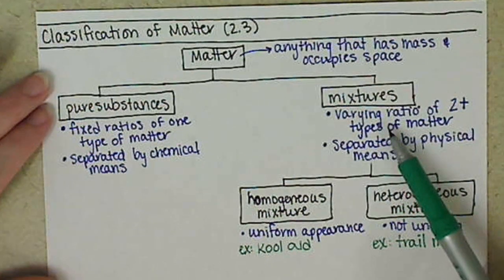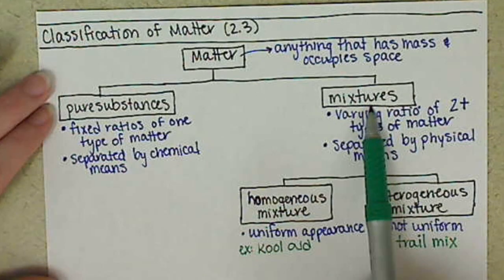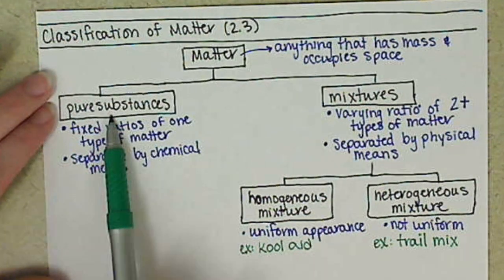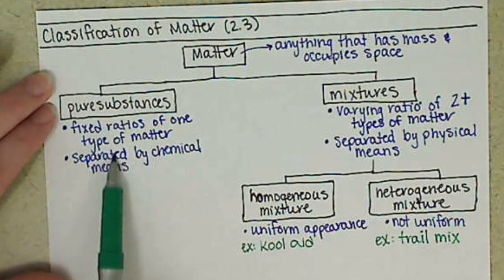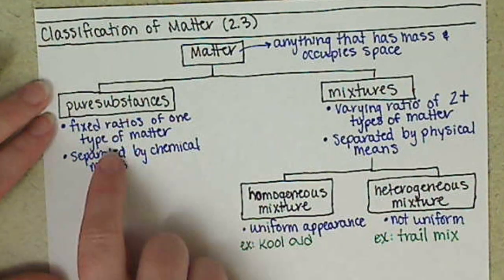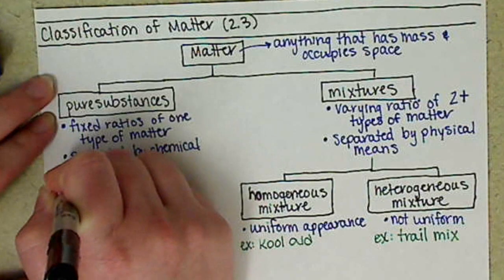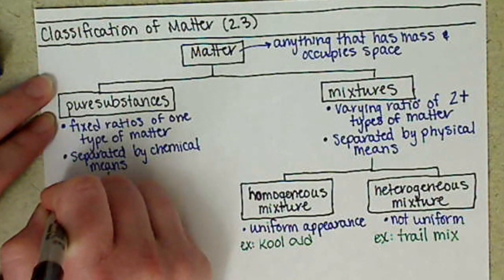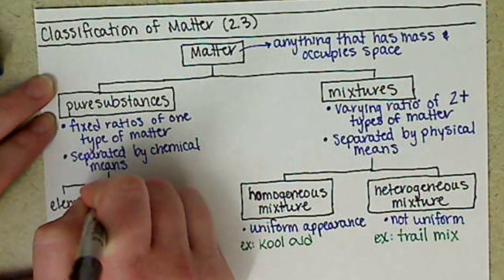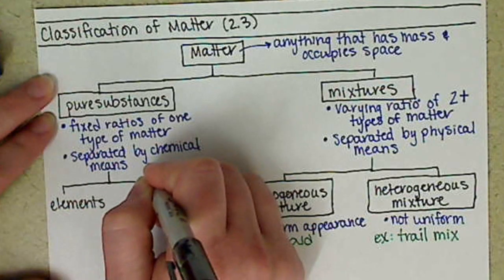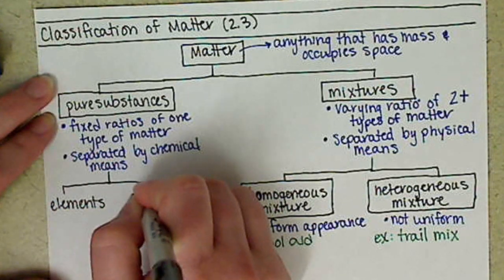Now that's one of the main differences of what mixtures versus pure substances are. So we have two different types of pure substances. We have elements and we have compounds.